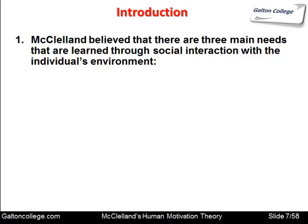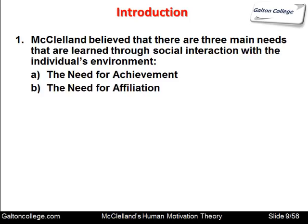The three needs are: first, a need for achievement — individuals want to achieve. Second, a need for affiliation, as McClellan called it — a need to come together, to work in groups, a need to mix with other humans. Third, a need for power — a need to control the situation, a need to be in charge. These are the three needs that McClellan put forward.